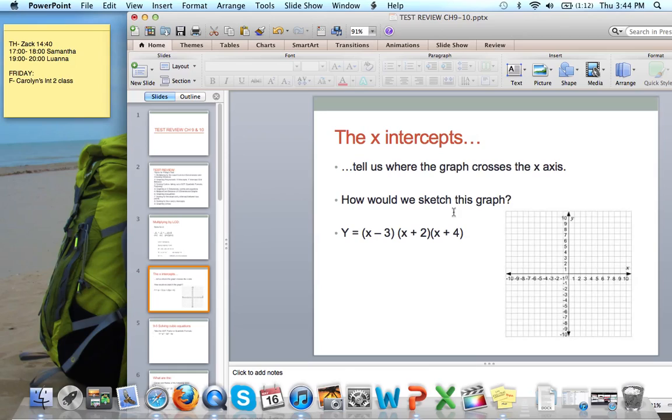So if we look here, our x-intercepts, or our zeros, are going to be when we set each of these brackets equal to 0. So here we're going to get 3. Here we're going to get negative 2. And here, finally, negative 4. Those are our 3 x-intercepts.